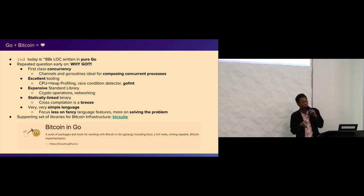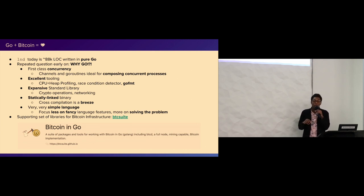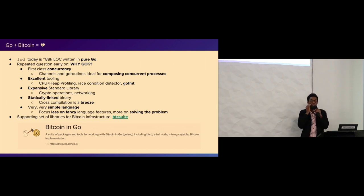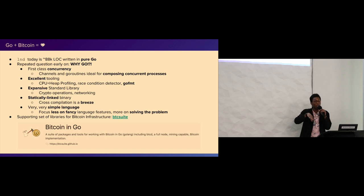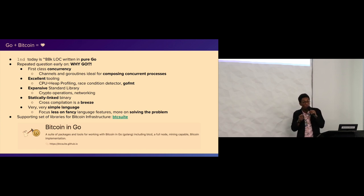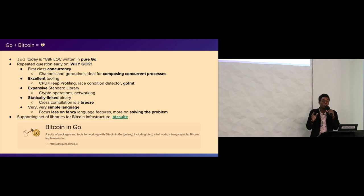Another cool thing is something called GoFmt. What GoFmt does is make everyone's code look the same. This matters on larger projects - we don't have to worry about whether we do a semicolon before the brace or a new line. You just write your code, run GoFmt, and everything looks the same. This is good because there's no argument in code review about proper code style - it's all built in.